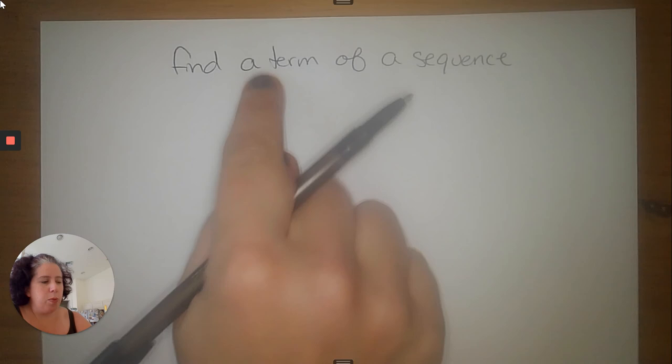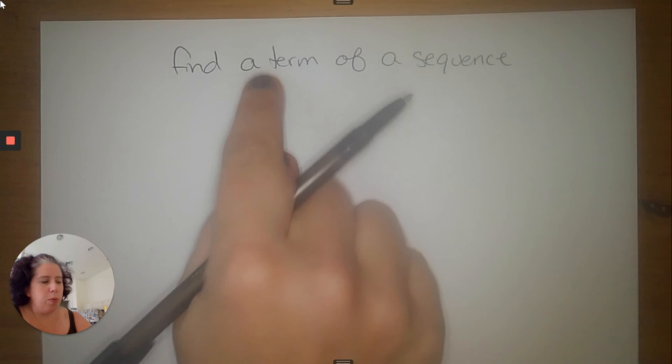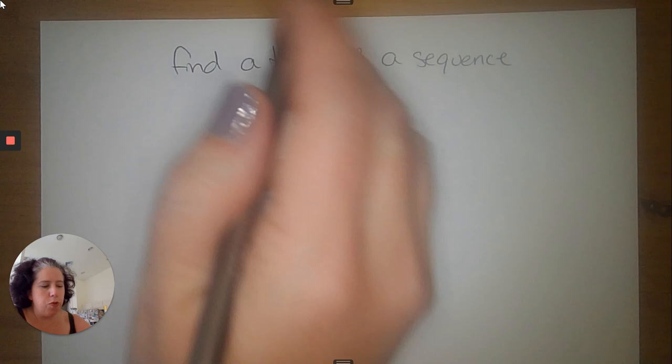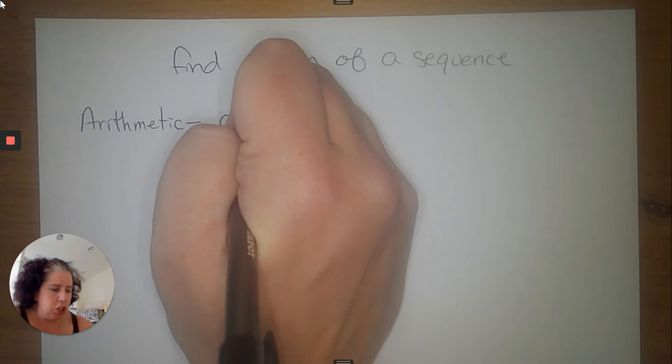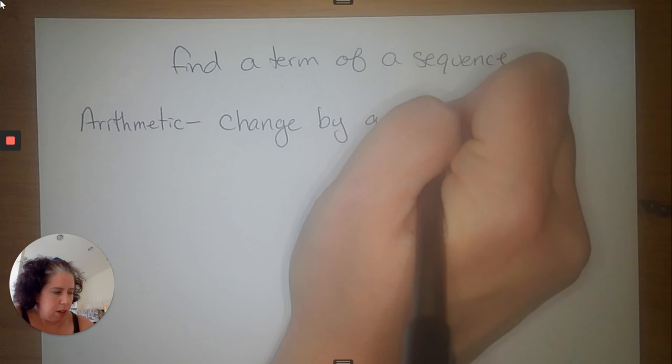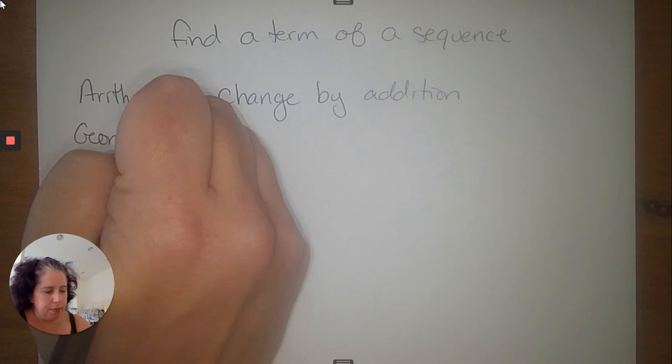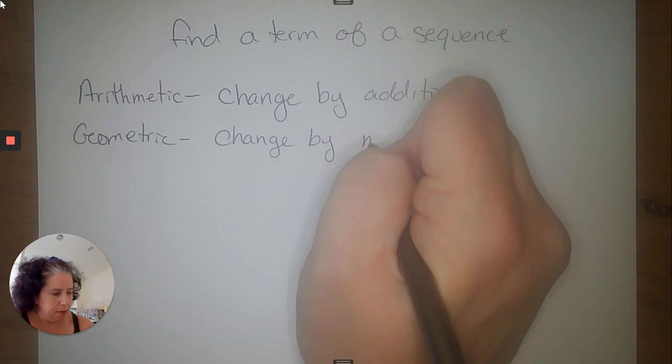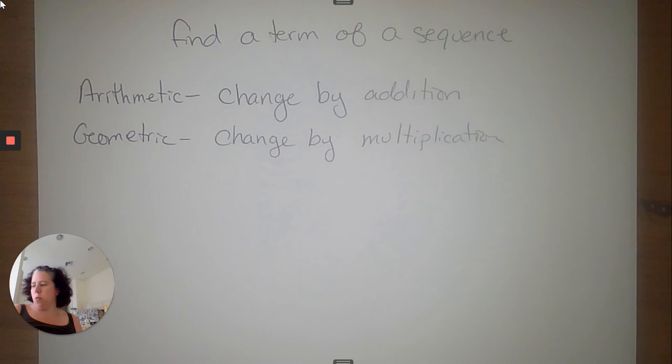We're going to continue what we were doing on Wednesday with arithmetic and geometric sequences, using the same formulas. So real quick: arithmetic sequences change by addition — and remember, it's got to be the same number every single time. Geometric sequences change by multiplication.